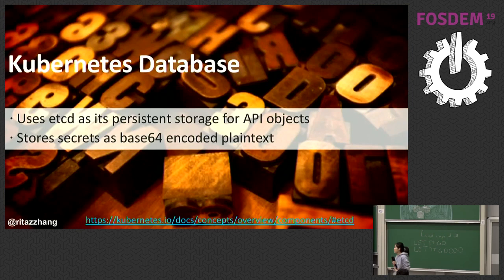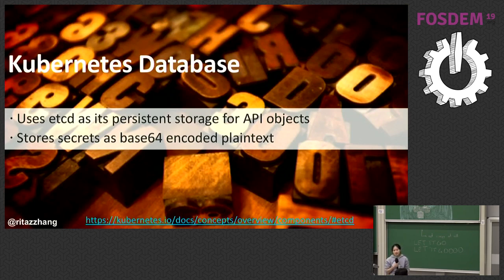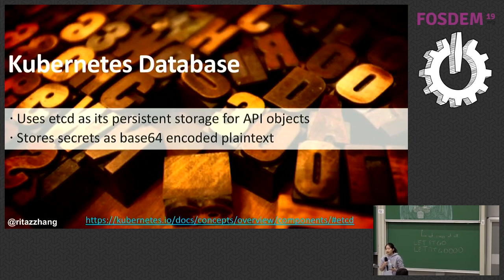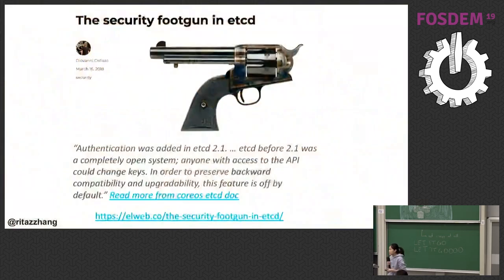So how could this even happen? Kubernetes uses etcd to persist Kubernetes objects — your secrets, your config maps, they're actually stored in etcd. A lot of people don't know this, but Kubernetes secrets are stored as base64-encoded plain text. If you look at etcd directly, they're stored as plain text — even though when you do 'kubectl get secret' it looks like it might be encrypted, it's just base64.